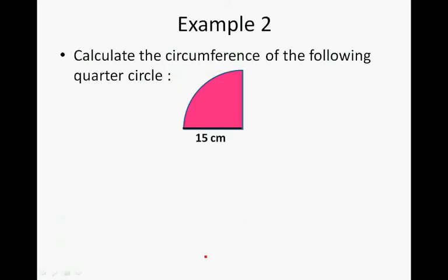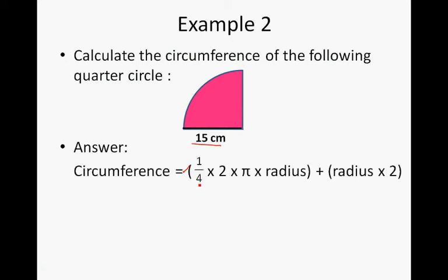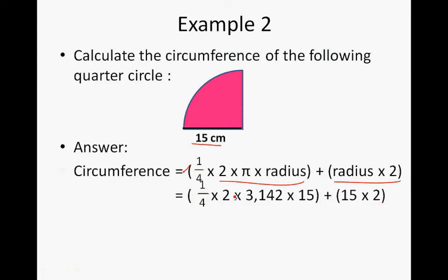Calculate the circumference of the following quarter circle with a radius of 15 centimetres. The formula is a quarter times two times pi times radius — that's the formula for a full circle — but this is a quarter of a circle, and then we add two radii, radius times two. Quarter times two times 3.142 times 15 centimetres, and then we add twice the radius.